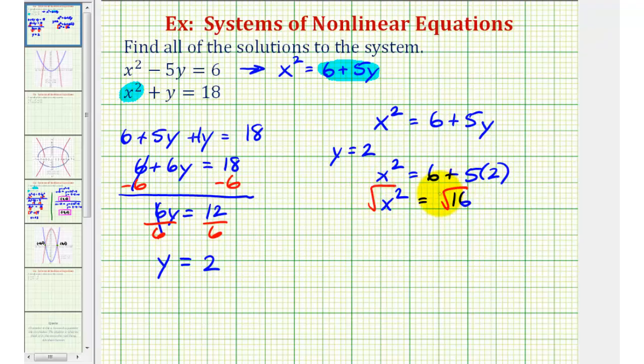We'll include a plus or minus sign on the right to make sure we obtain both solutions. Since the square root of 16 is equal to four, x is equal to positive or negative four, or plus or minus four.